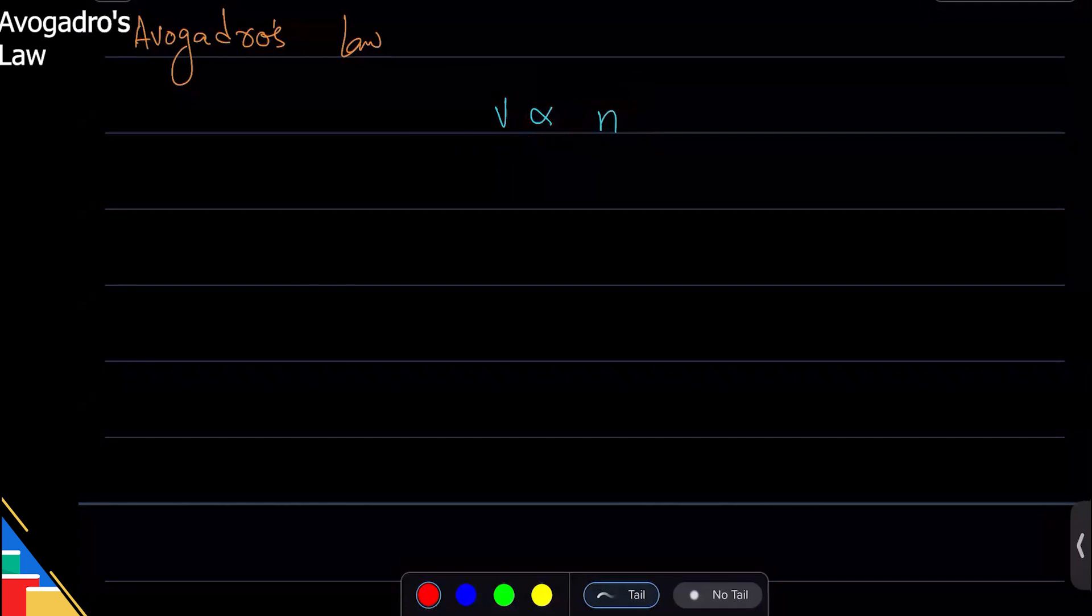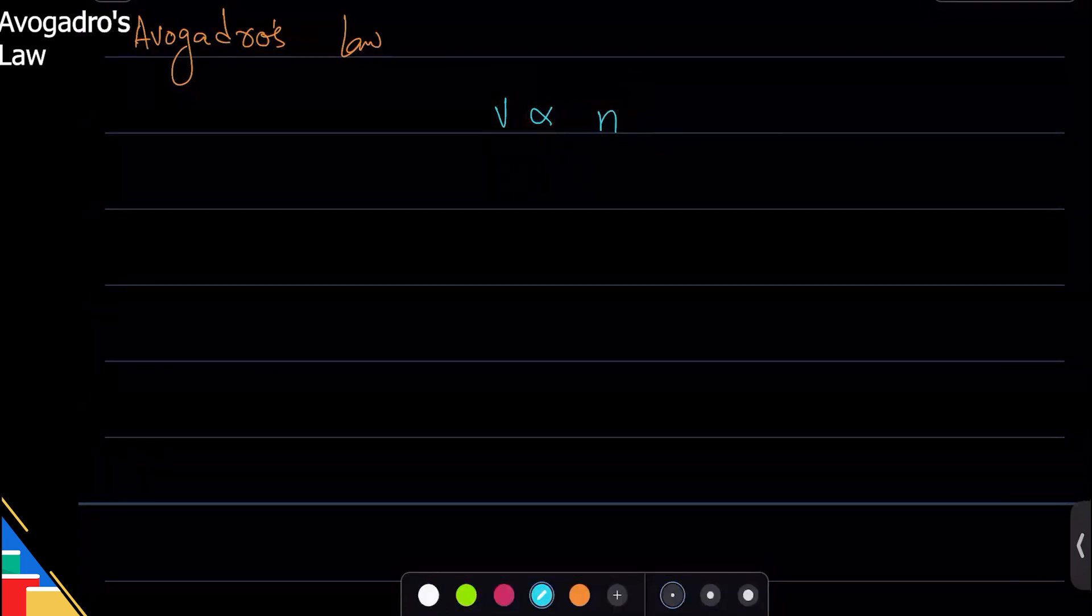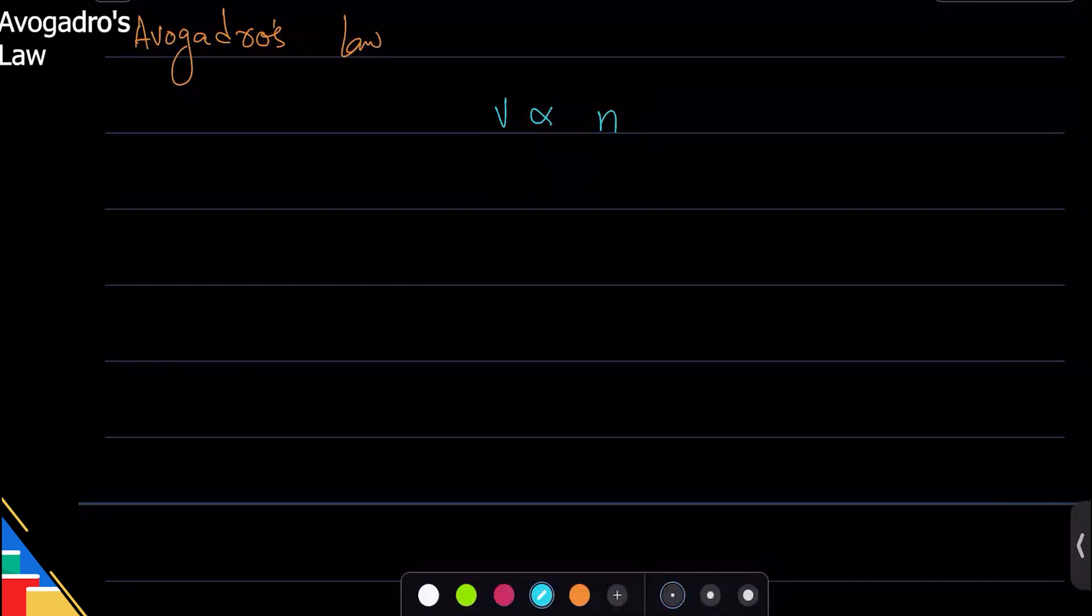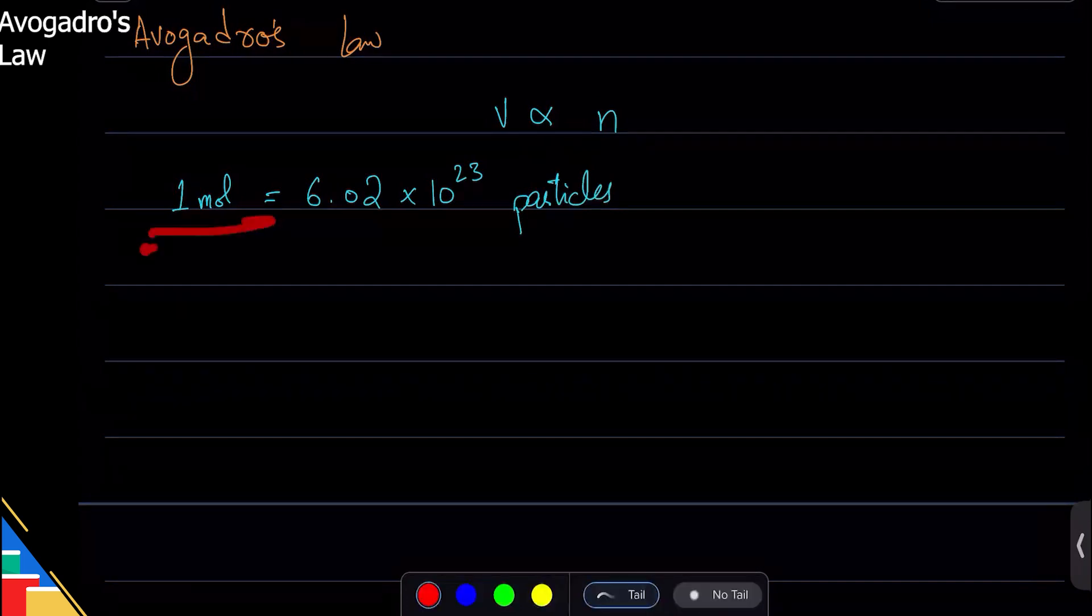And this is the reason we use moles. What we do is we have one mole, and that is 6.02 times 10 to the power 23 particles. We fixed how many particles we have - we have one mole, and that is this many particles exactly.